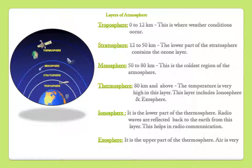Exosphere: It is the upper part of the thermosphere. Air is very thin here. This is the area where satellites orbit the earth.